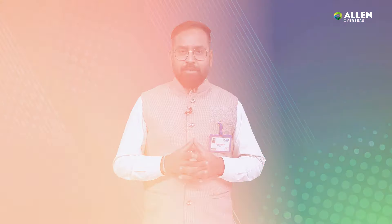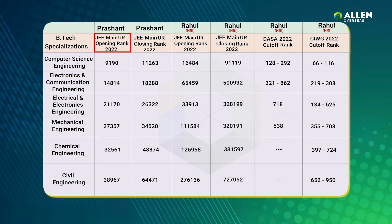For NIT Calicut in Computer Science Engineering, the JEE Main opening and closing ranks for Prashant are 9,190 and 11,263 respectively, while for Rahul they are 16,484 and 9,190 respectively. According to these ranks, Computer Science Engineering is the most in-demand branch in NIT Calicut as well, having higher cut-offs in comparison to other branches for both Prashant and Rahul. Similarly, the organizing institute releases opening and closing ranks for the DASA category, according to which seat allotment is performed. It may also be possible that not every branch in every institution has seats reserved under DASA or CIWG.